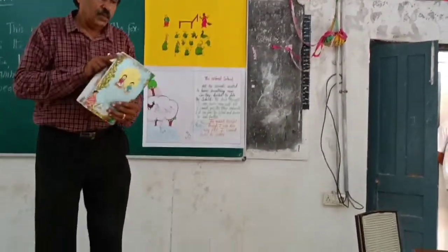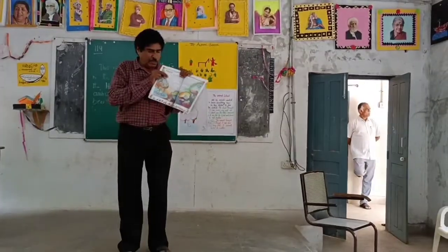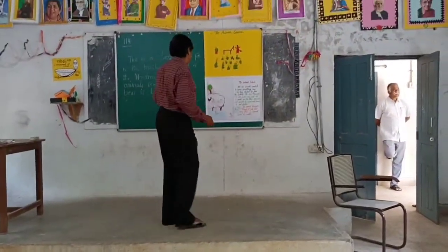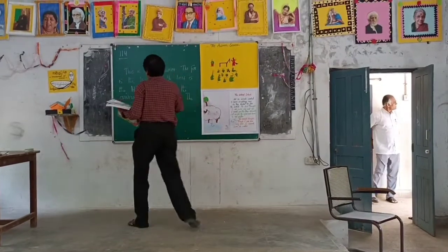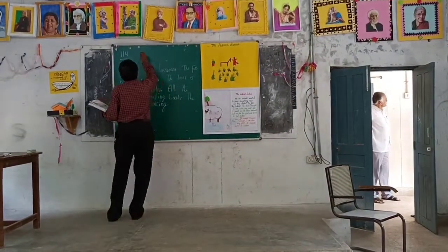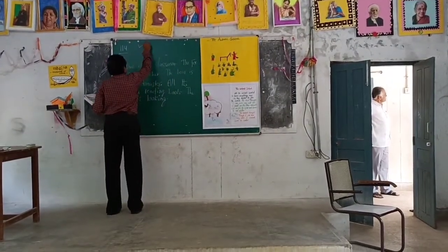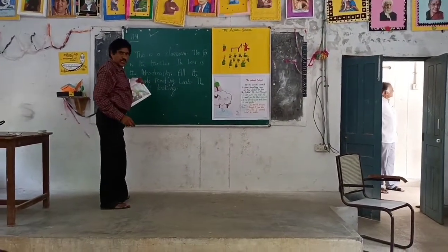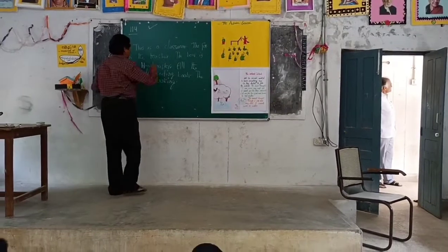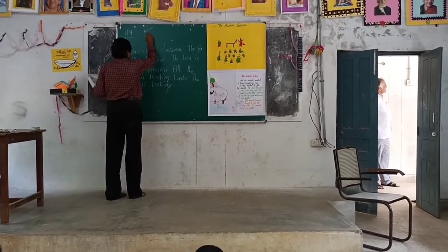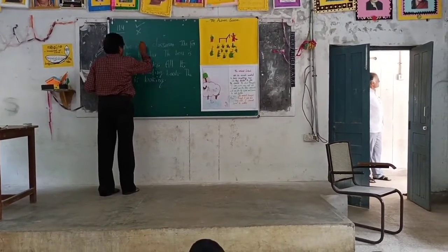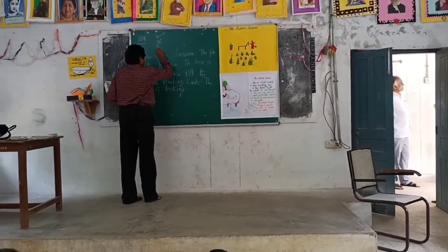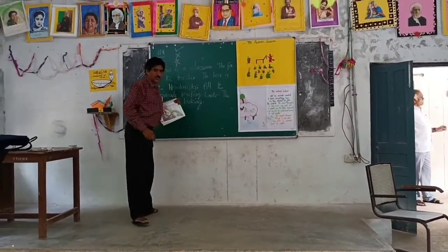While you are reading, if you understand some sentences, put big marks. If you don't understand some sentences, put cross marks. If you like some sentences, put star marks.